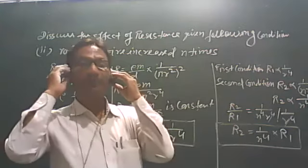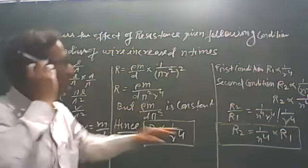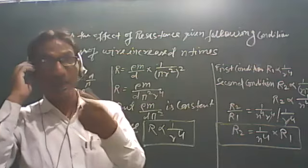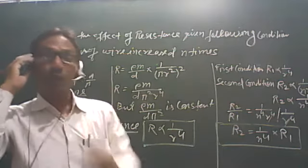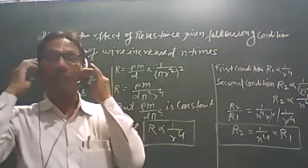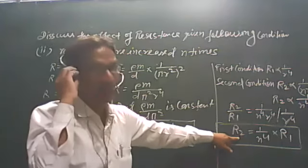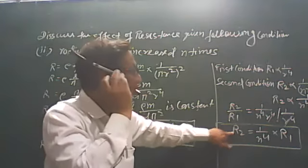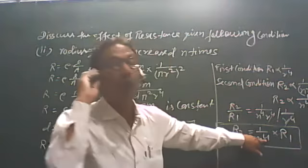Do you understand? Sir, tell us about the second case. We have established that if the radius of wire is increased n times, then the resistance of the new wire will be 1 upon n to the power 4 times. So we will see this formula directly — the new resistance is 1 upon n to the power 4.